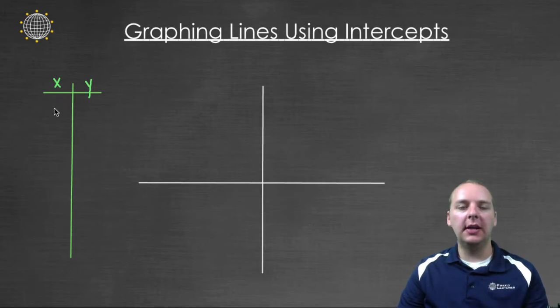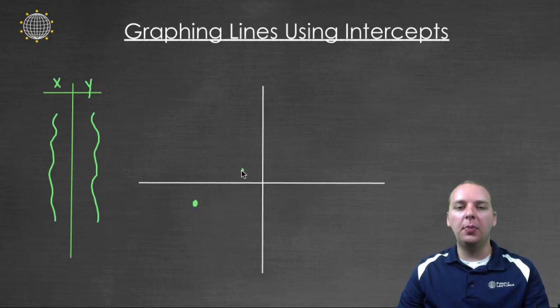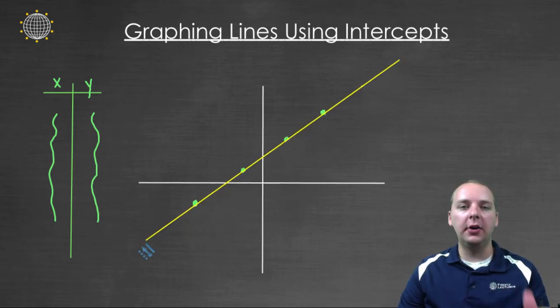You remember back when we were using an x-y table, what we would do is we would pick a bunch of x values, we would find the y values that went with those particular x values, and that would give us some ordered pairs that were on our line. When you plotted all these points, they would line up in a straight line, and then we would connect the dots between these points, and that would give us the graph of that linear equation.